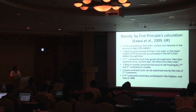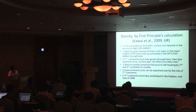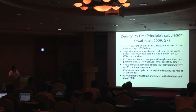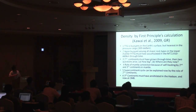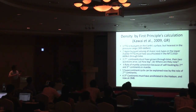Density from first-principles calculations has several conclusions. First, granite is buoyant on the Earth's surface but is heaviest in the mantle transition zone. Second, TTG becomes buoyant among all major rock types in the lower mantle. Therefore, granite must have accumulated in the mantle transition zone through time. Third, the second continent must have grown through time. Two questions arise: how big, and where are they now? Fourth, lower mantle convection, because of self-heating material from the second and third continents, drastically modified mantle dynamics.